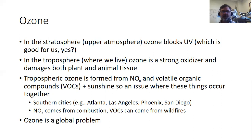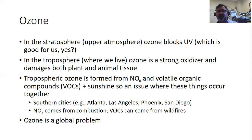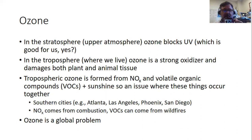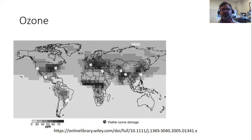Ozone in the troposphere can combine with nitrous oxides and volatile organic compounds to produce things like smog. Living about 90 miles from Atlanta, there were hot workdays when you should not go outside and breathe the air, especially with asthma. Ozone is a global problem — not just for southern cities but for cities around the globe, particularly where it's warm.